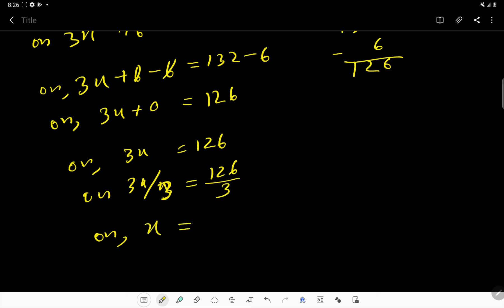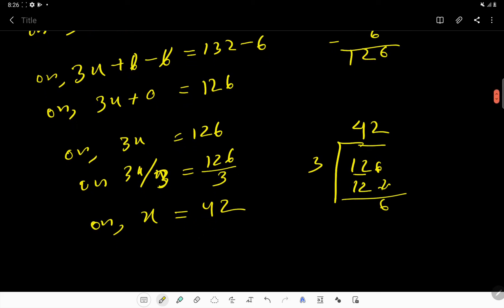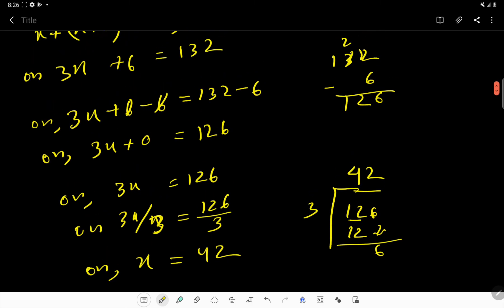126 divided by 3 - what will happen? 3 goes into 12 four times. 4 times 3, then 6 will come down, giving us 42. So we are getting here 42. The value of x is 42.